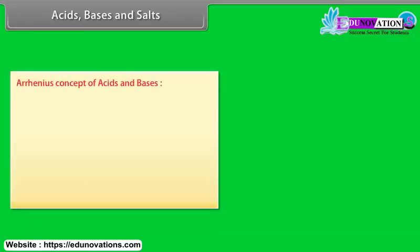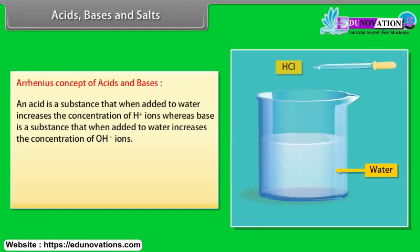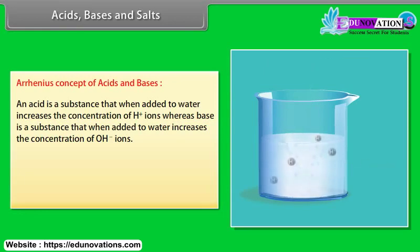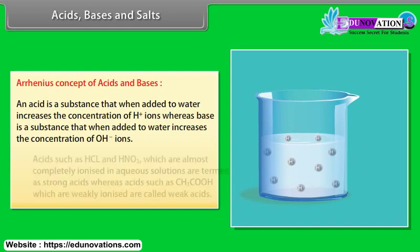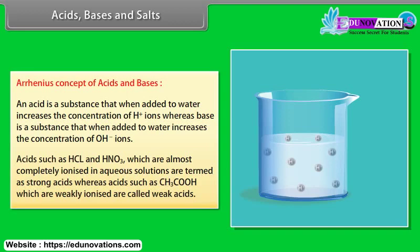Arrhenius concept of acids and bases. An acid is a substance that when added to water increases the concentration of H+ ions, whereas a base is a substance that when added to water increases the concentration of OH- ions. Acids such as HCl and HNO3 which are most completely ionized in aqueous solutions are termed strong acids.